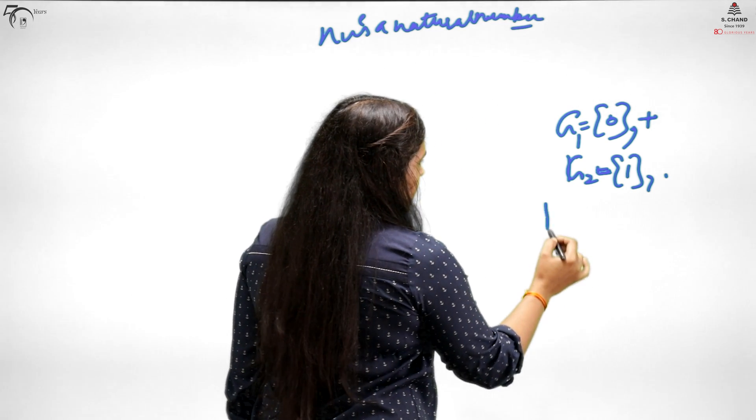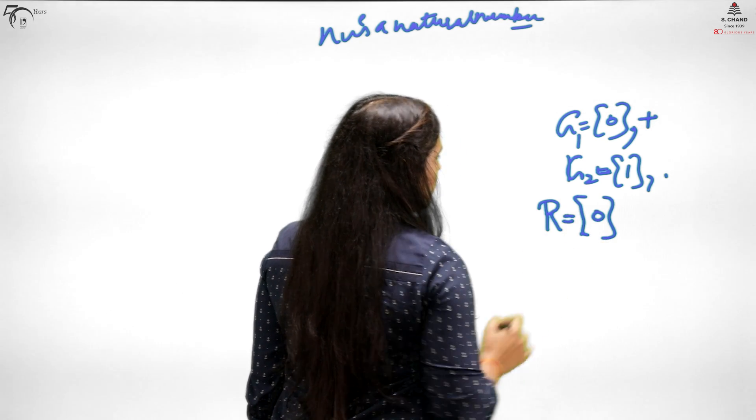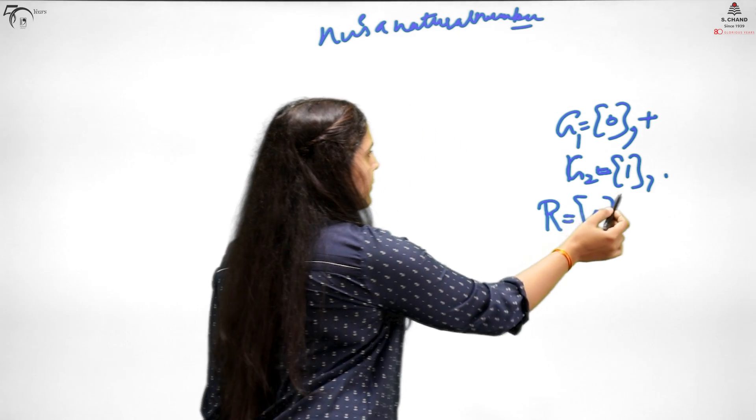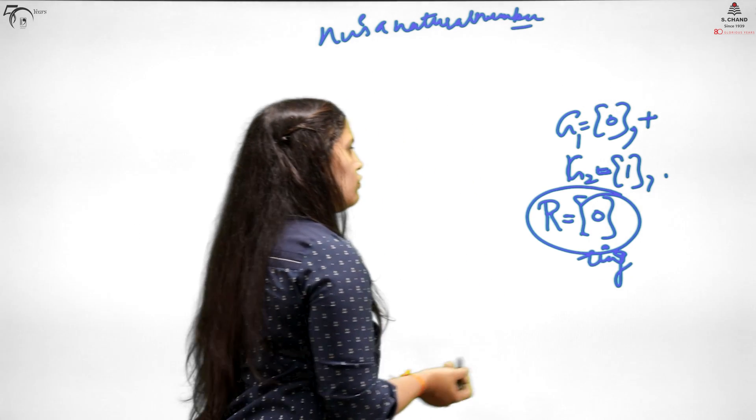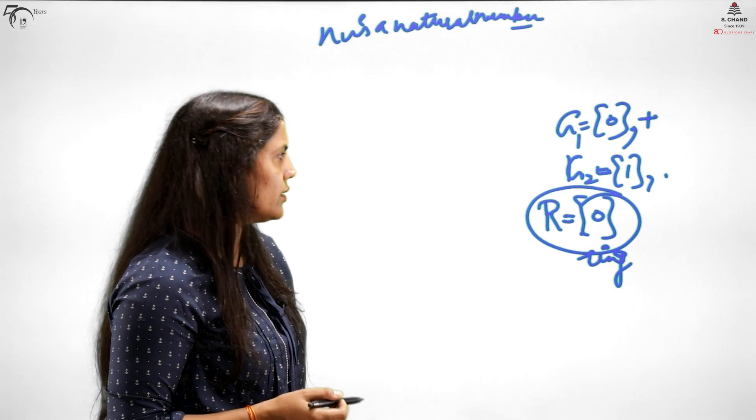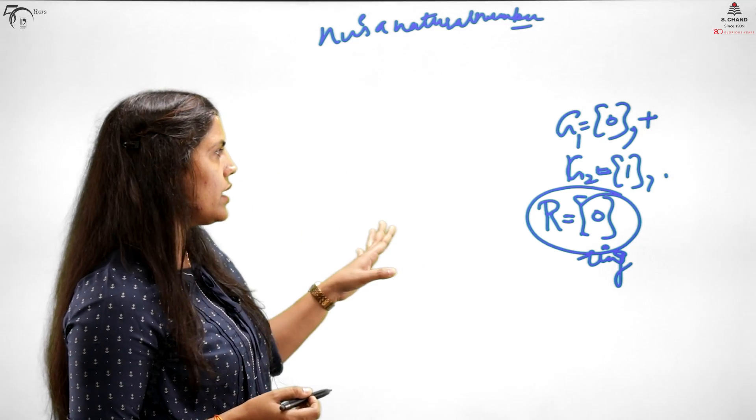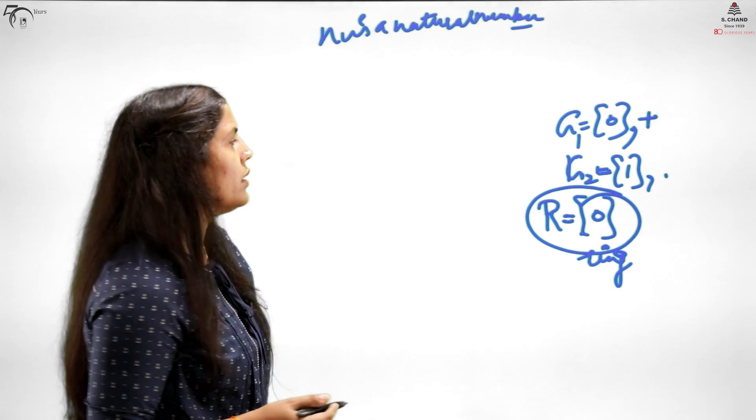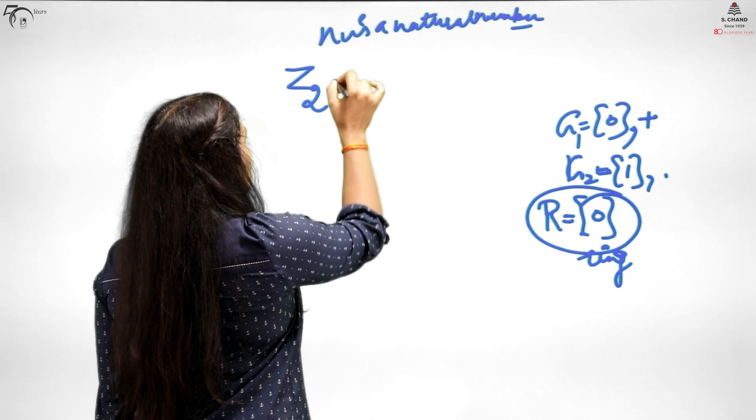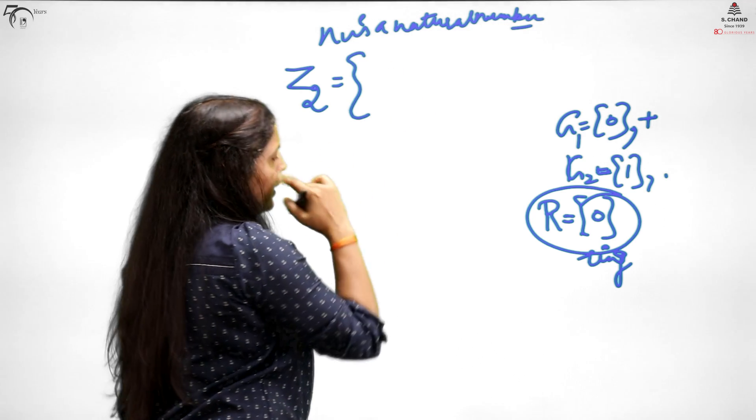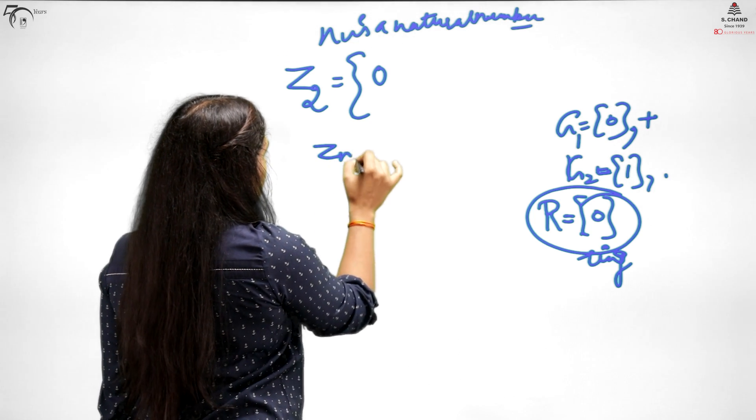So now start Z_n. First let me take Z2. What are the elements in Z2? Let me write the set first. It has elements from 0 to n minus 1. If n is 2, then elements go up to 2 minus 1, which is 1. So in Z2, elements are 0 and 1.